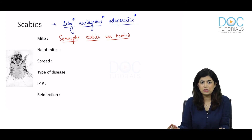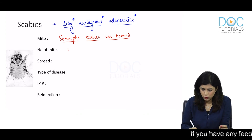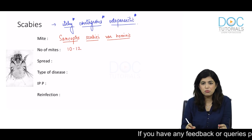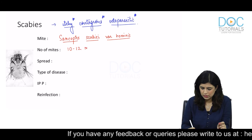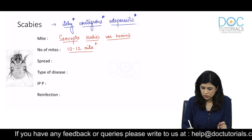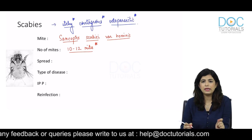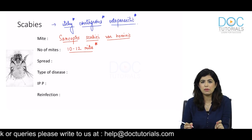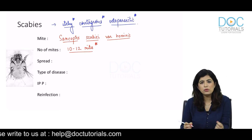Even though there may be millions of lesions on the body, the number of mites present at one time are only 10 to 12. At any one time on the human body, there are only 10 to 12 mites. This is a very important point — it is frequently asked as an exam question.